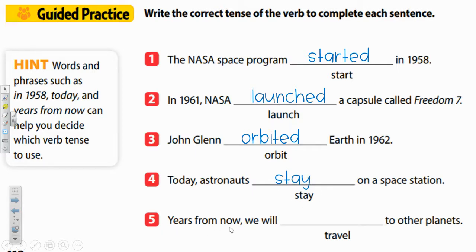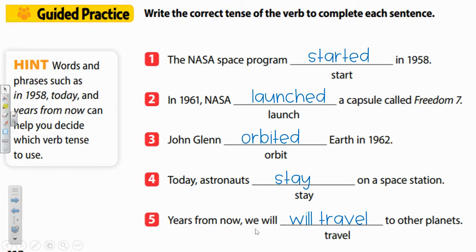And lastly, number five: years from now, we will blank to other planets. The keyword will and the phrase years from now tell us we're using the future tense. Years from now, we will travel to other planets. Make sure you don't add will twice — it's already there, so just keep travel. It should say: years from now, we will travel to other planets.